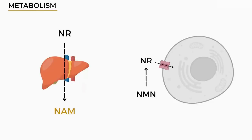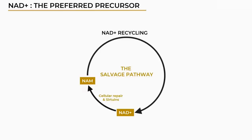Also with NMN, some studies have suggested that the majority of NMN is metabolized into NR before it's then taken up by the cells. And finally, we know that nicotinamide is the preferred precursor for the body — it is the physiological circulating NAD precursor that the majority of our NAD is naturally made from.